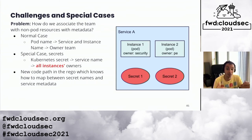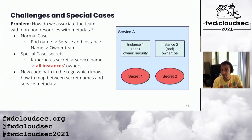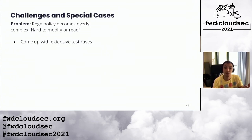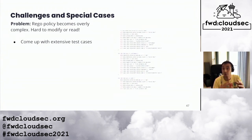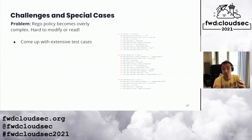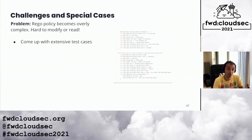As you can imagine, this came with a price — this approach made the Rego policy long and overly complicated. To make sure we had enough coverage, we wrote extensive test cases. In fact, our unit test coverage covered more than 2,000 lines of code.